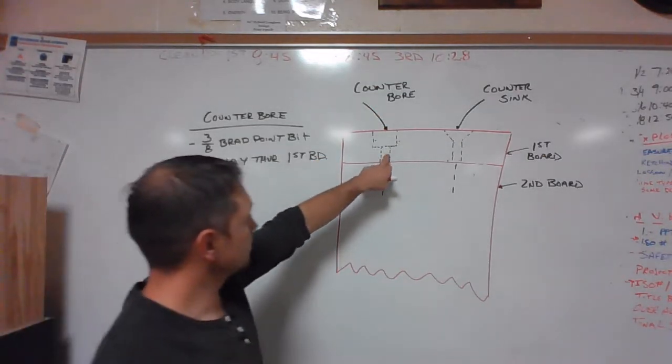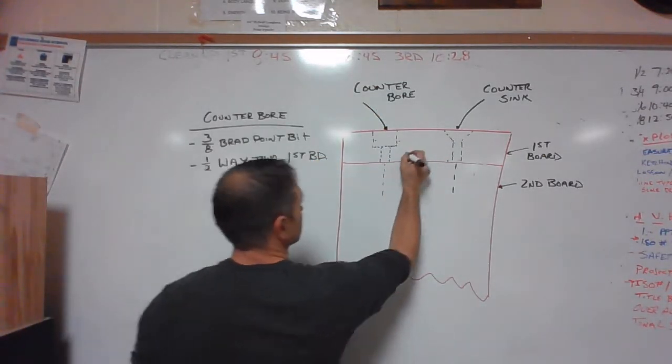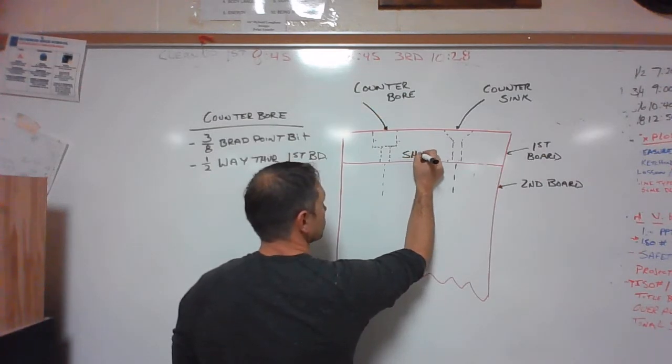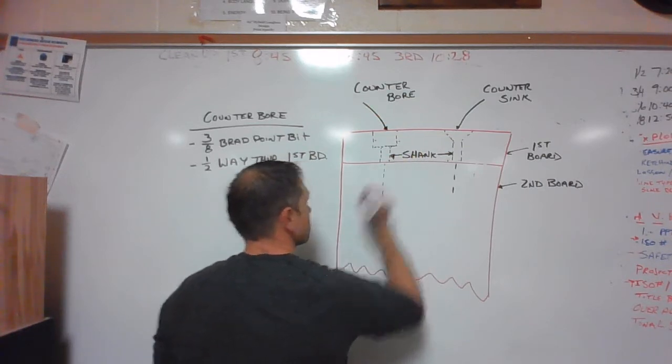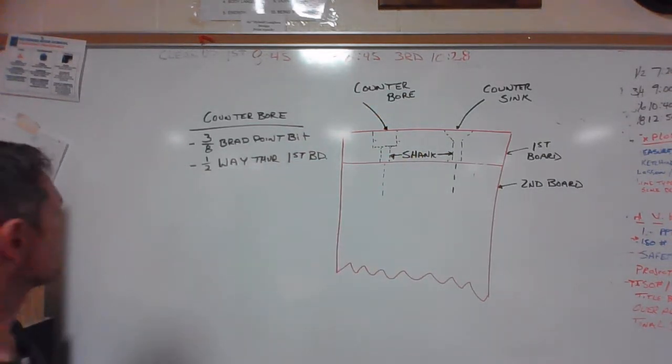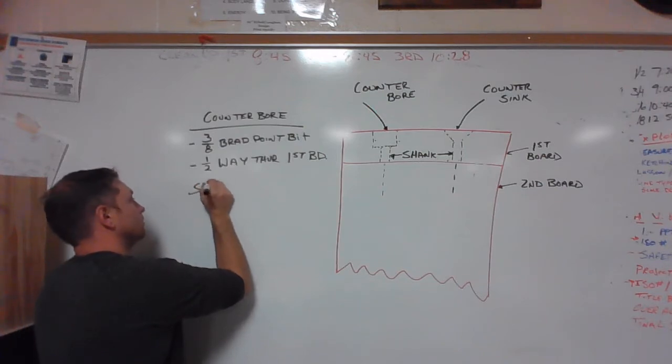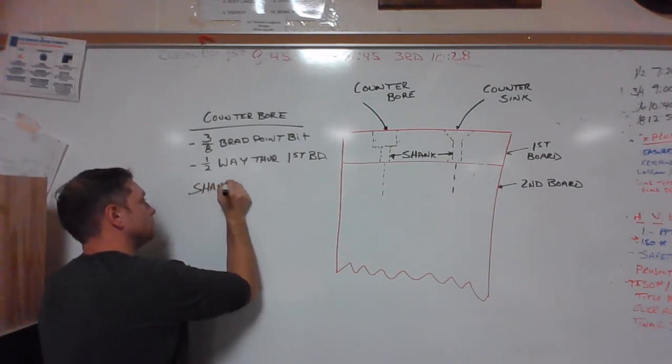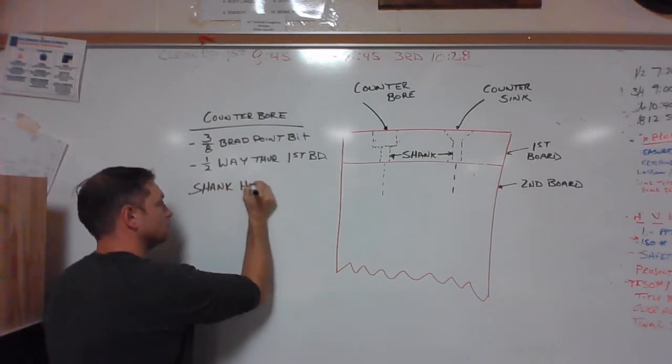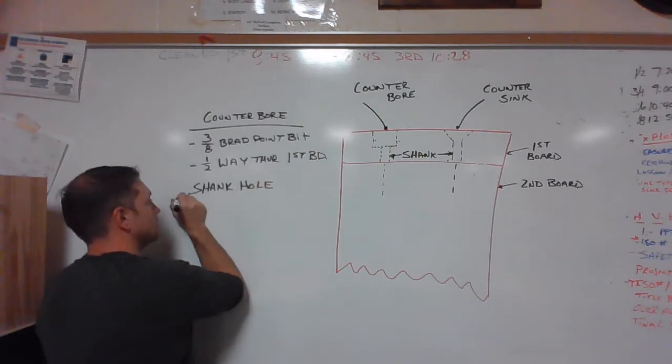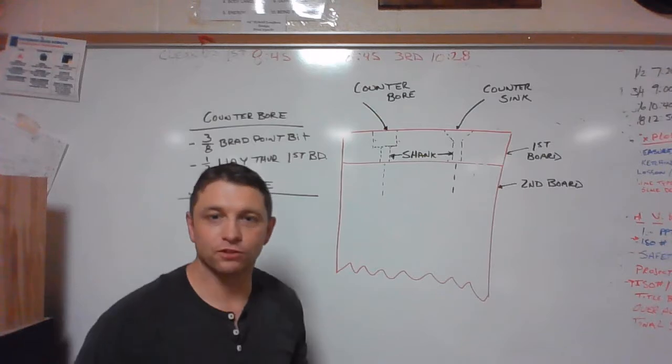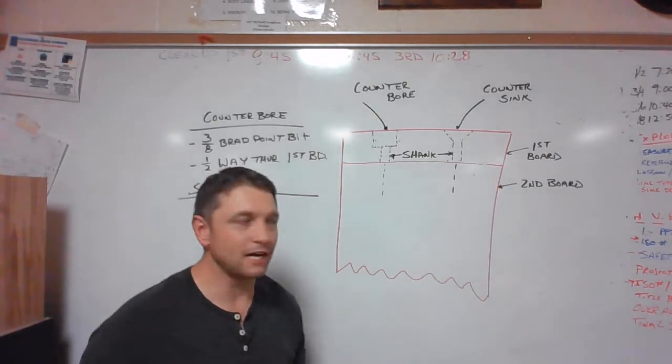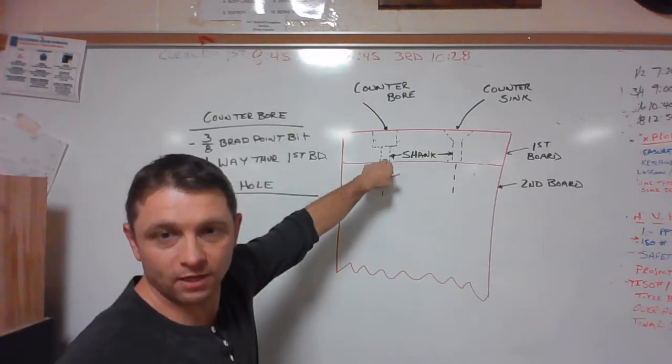The next hole here in the sequence is referred to as a shank hole. Now the size of this hole has to be determined by the screw. So your screws vary in size so this hole slightly vary in size.